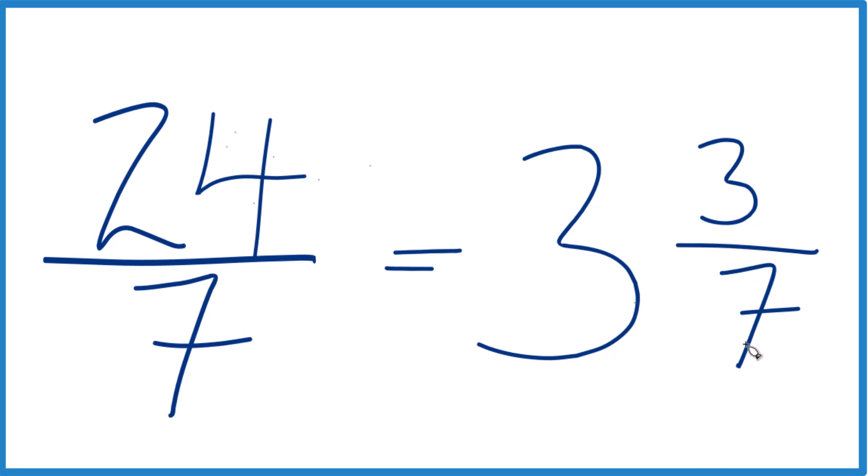And you can check that. 3 times 7 is 21. 21 plus 3, that's the 24. Keep the 7 the same.